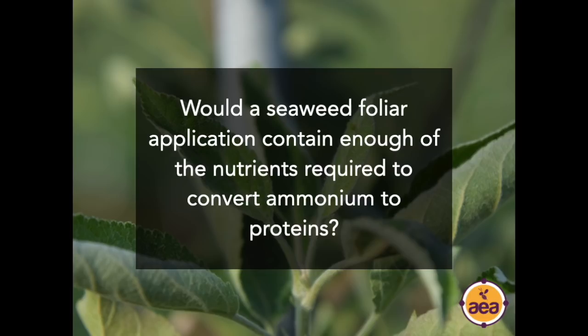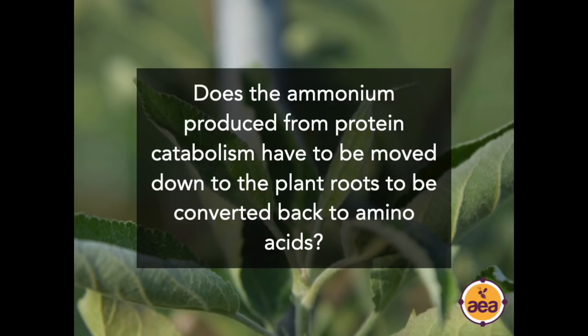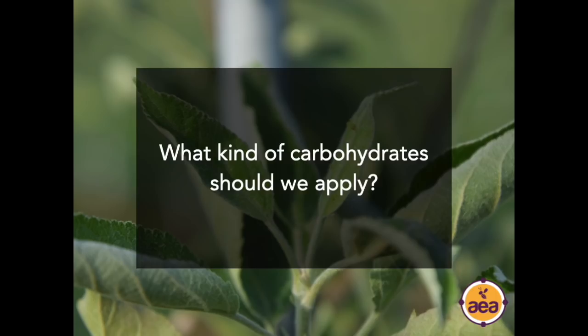Question: would a seaweed foliar application contain enough nutrients to convert ammonium to protein? The answer is no. You need to add those additional elements I mentioned. The C-Stim product is a seaweed product and it doesn't contain enough by itself to trigger the protein conversion process. Question from Michael: does ammonium from protein catabolism have to be moved down to the plant roots to be converted back to amino acids? My understanding is no — the conversion process can happen in the leaves, but it's much less efficient than in the root system. Regarding what kind of carbohydrates to apply: Rejuvenate is the most effective because it contains enzymes and enzyme cofactors beyond just carbohydrates.